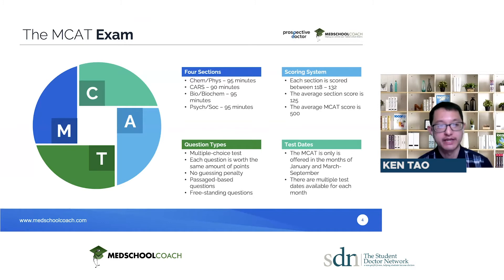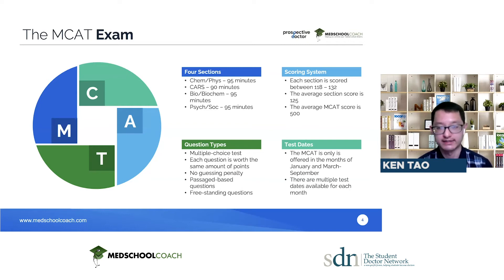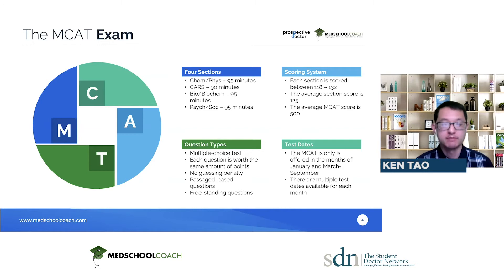The MCAT has four sections. The first is the Chem-Phys section — its full name is the Chemical and Physical Foundations of Biological Systems. This is one of three science sections of the exam, and it is 95 minutes and 59 questions. The second section is CARS, which stands for Critical Analysis and Reasoning Skills. This section doesn't require any knowledge of science content. You read passages on social studies and humanities topics and answer questions about them, but the MCAT CARS section is actually more difficult than high school exams and requires a separate set of strategies.